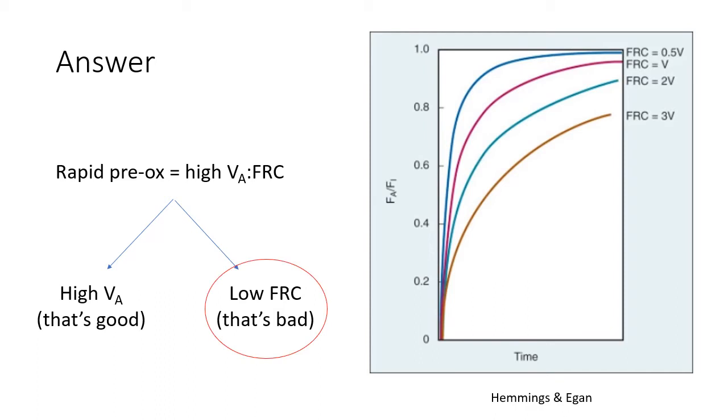Note that with inhalational induction, it is likewise not the alveolar ventilation, but the ratio of alveolar ventilation to FRC that affects the rate of wash-in. The ratio of alveolar ventilation to FRC is in effect a rate constant. The volume units cancel each other out to leave us with minutes to the negative one. The higher the ratio of alveolar ventilation to FRC, the higher the rate constant, and the faster the equilibration.